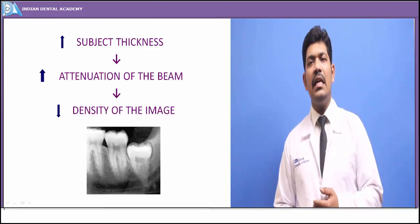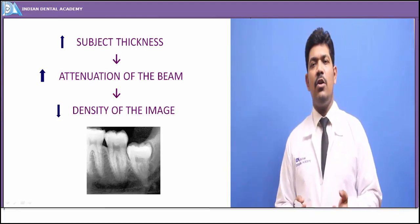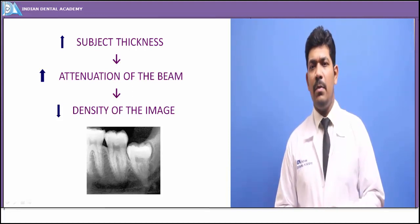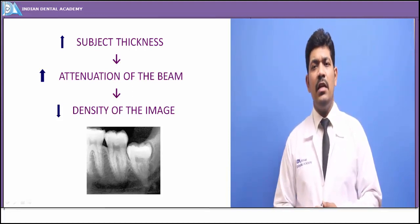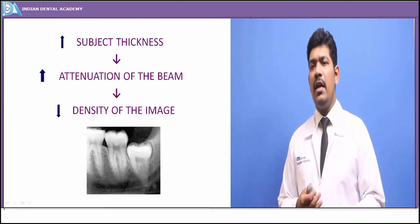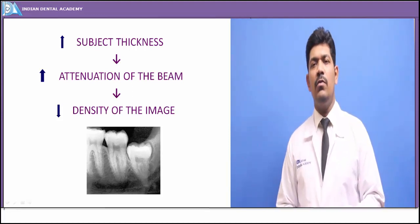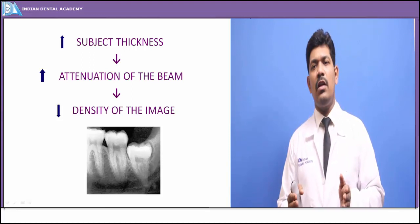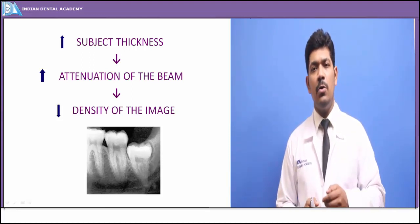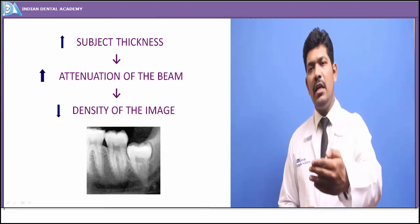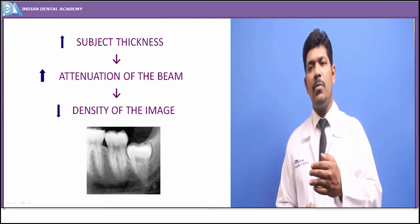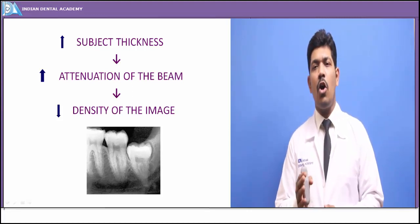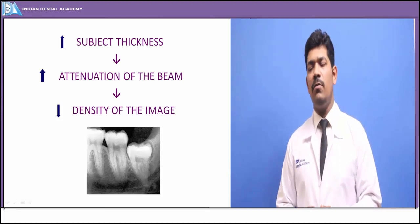Regarding subject thickness: with an increase in the subject matter, there is greater interaction between photons and matter between the x-ray source and the image receptor, resulting in greater attenuation of the x-ray beam and hence lesser density of the image. If a patient has a greater mass in the area of interest, we have to proportionally increase the amount of exposure so that we get an optimal density of the image.